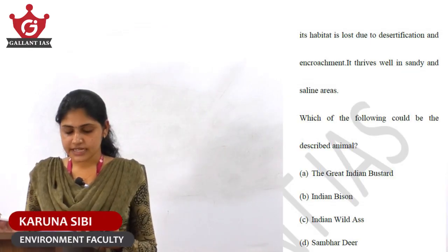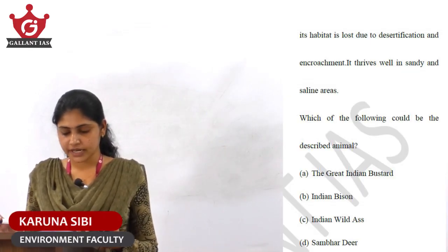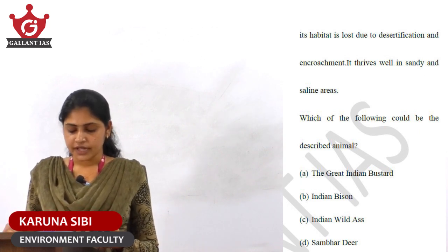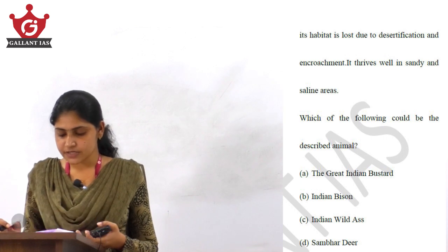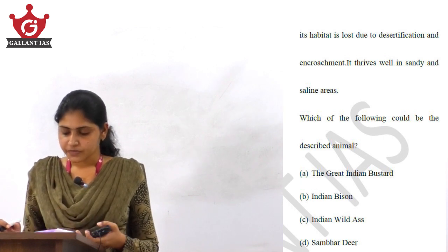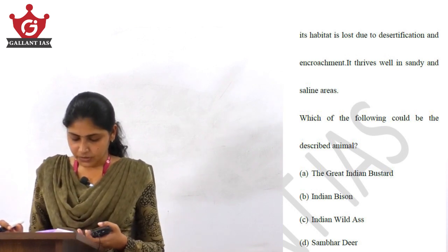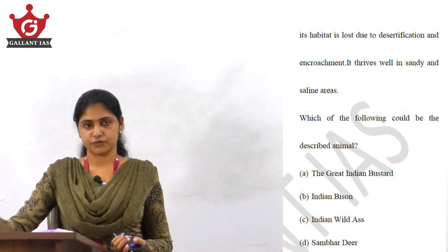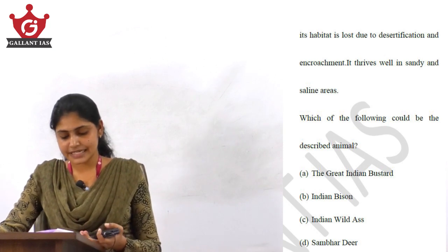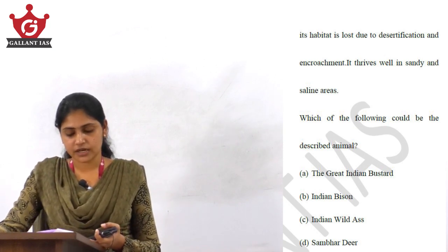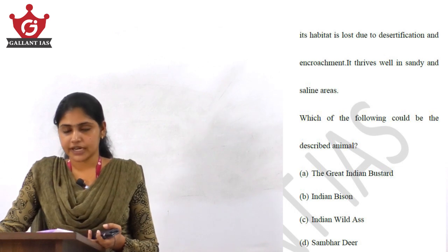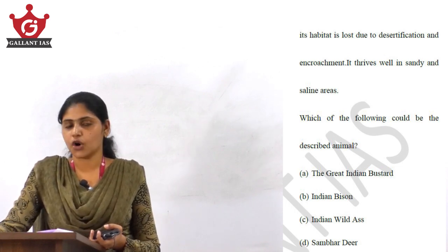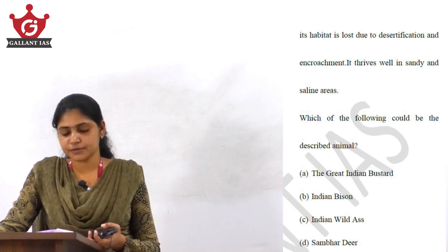Question 20 says this animal species has no predators but its habitat is lost due to desertification and encroachment, and it thrives well in sandy and saline areas. Which of the following could be the described animal? This is the Indian Wild Ass, which is said to have no predators.